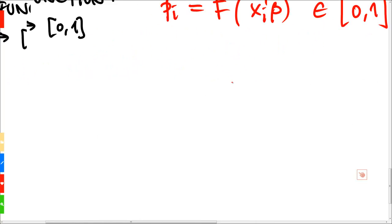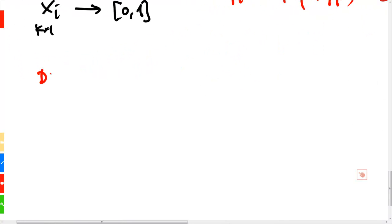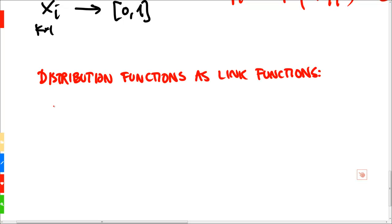A typical way of choosing the link function is to use distribution functions. The distribution function, we could call capital F of y, that's equal to the probability that stochastic variable y takes on a value that is smaller than or equal to y. Note that this is just the integral from minus infinity to y of ft with respect to t, so ft here is simply our density function.